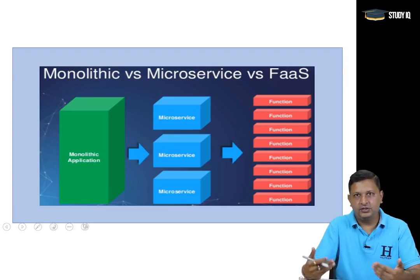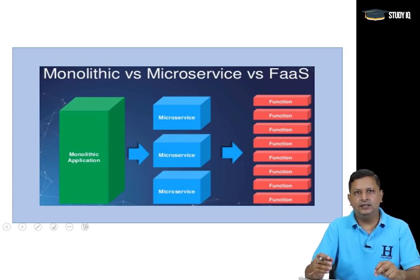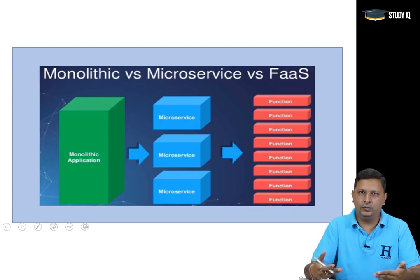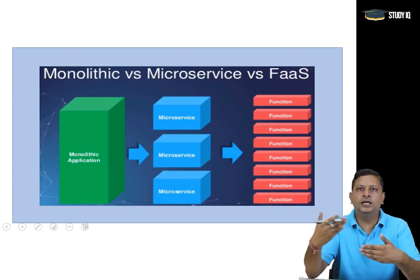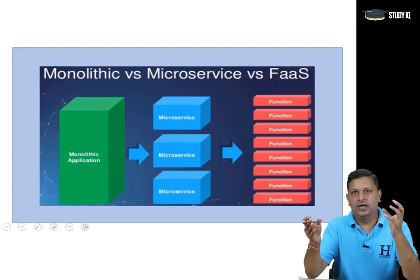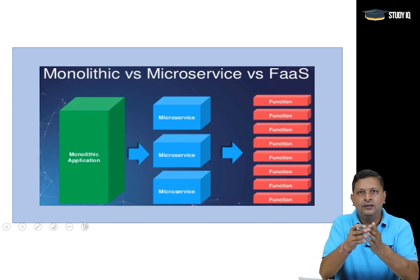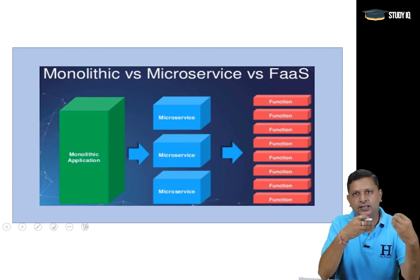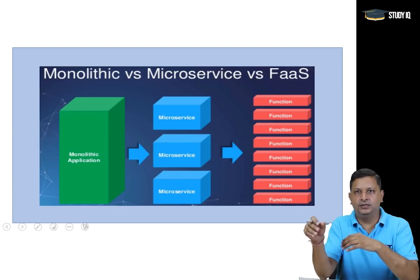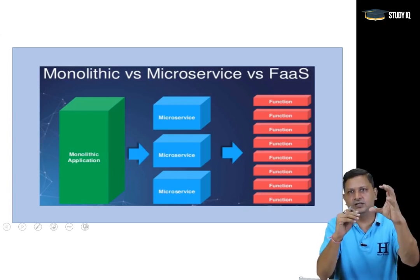Next is Function as a Service, generally called serverless. Even with containers, I still need to take care of the server - the infrastructure, hardware, and operating system on top of which the container runs. If I want to reduce time further and improve scalability, what if I don't even need to worry about creating instances, virtual machines, or operating systems? What if I just write my business functionality as a function?